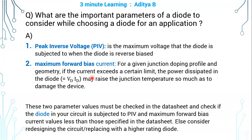Of course, a higher-rated diode will be larger in size, with more power dissipation capability and higher PIV capability, but its cost and weight will also be more. So you should do a trade-off between all these parameters.